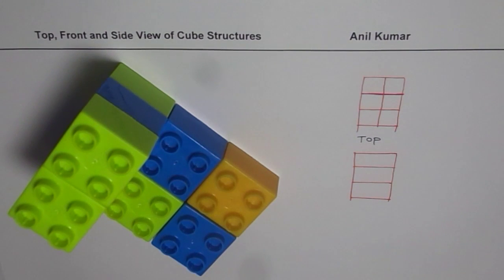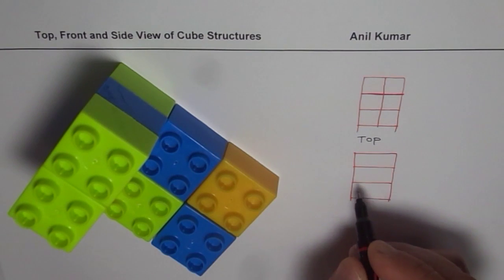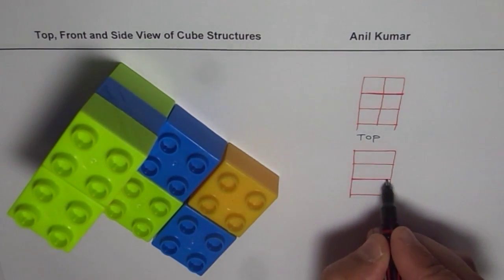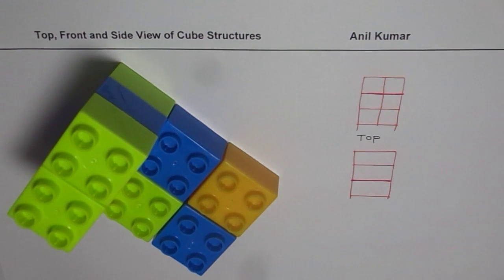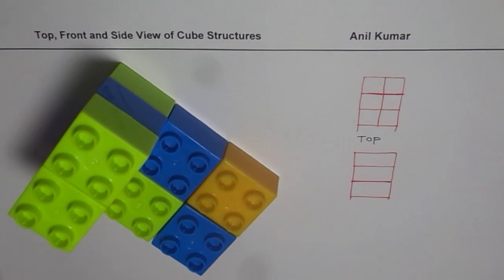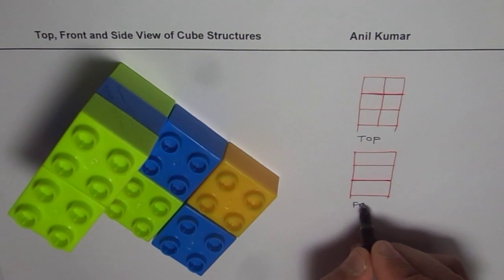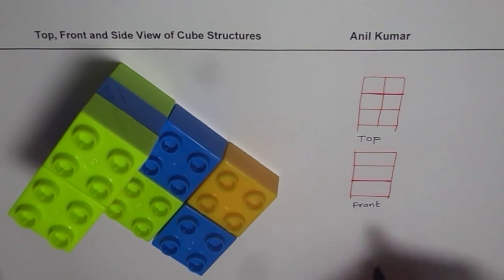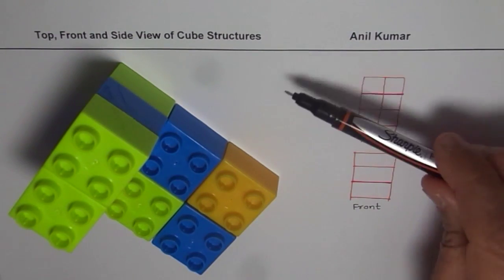From the front view, at the first level there is a change in depth, and that change in depth is reflected by a bold line. That bold line reflects the change in depth. That is my front view.